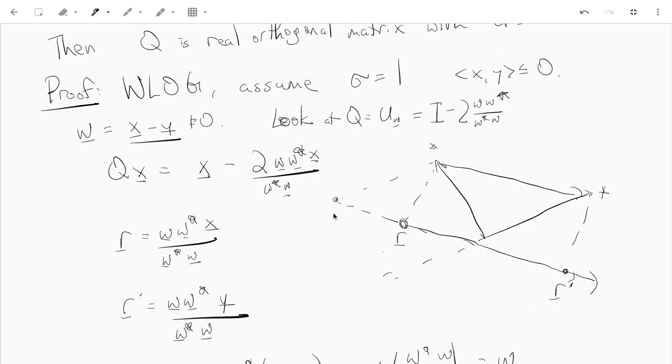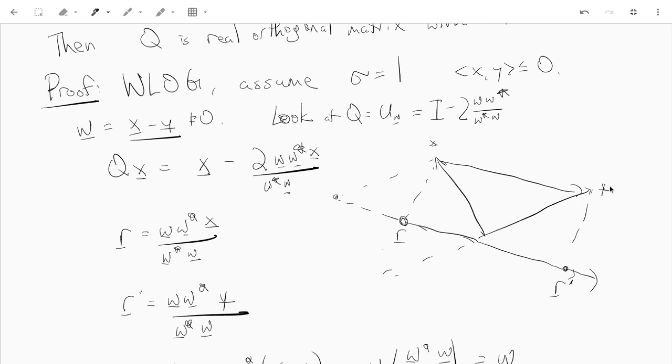So I've drawn a little picture here. Here's x and here's y. They're of the same length, meaning that this triangle is like an isosceles triangle. And that's really kind of the key to what makes everything work. And then over here, this is the vector x minus y. Because negative y is over here, and then x plus negative y ends up over there. And then I'll call this vector, the projection of x onto w, I'll call this r. I'll call the projection of y onto w, r prime.